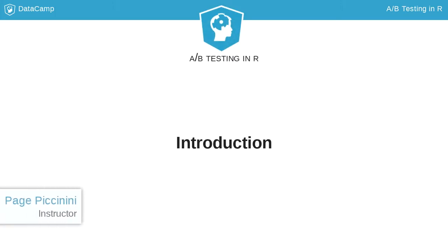Hi, my name is Paige Piccinini. I'm a data scientist and I'll be your instructor for this course on A-B testing in R. A-B testing is a powerful way to try out a new design or program changes before making final decisions. In this course, we'll go over the fundamentals of A-B testing so you can get started on building and analyzing your own A-B experiments.